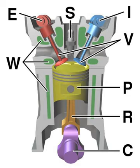In contrast, in external combustion engines, such as steam or sterling engines, energy is delivered to a working fluid not consisting of, mixed with, or contaminated by combustion products. Working fluids can be air, hot water, pressurized water or even liquid sodium, heated in a boiler.